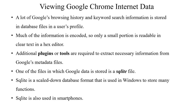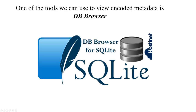A lot of Google's browsing history and keyword search information is stored in database files in a user's profile. Much of the information is encoded, so only a small portion is readable in clear text in a hex editor. Additional plugins or tools are required to extract necessary information from Google's metadata files. One of the files in which Google's data is stored is a SQLite file. SQLite is a scaled-down database format used in Windows to store many different kinds of functions, and SQLite files are also used in smartphones. One free tool that will allow you to view these SQLite files is called DB Browser — just search for it on your browser and download it for free.